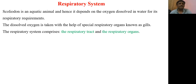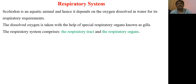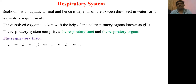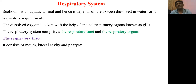The respiratory system in Sclerodon consists of the respiratory tract and respiratory organs. For convenience, we are going to study the respiratory system under these two headings. Firstly, the respiratory tract. In Sclerodon the respiratory tract consists of the mouth, buccal cavity, and pharynx.